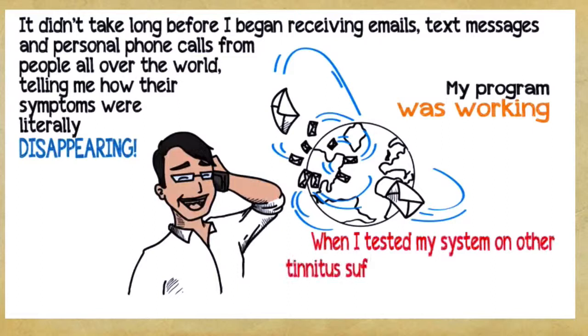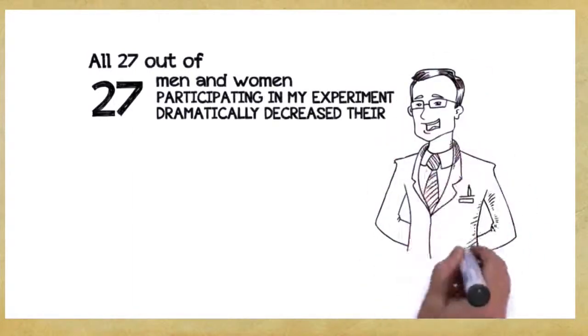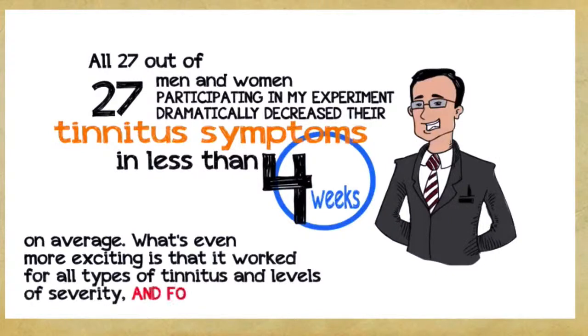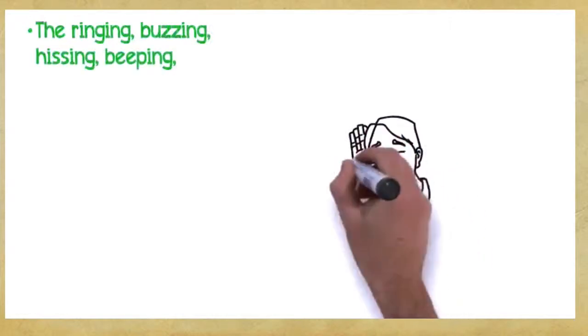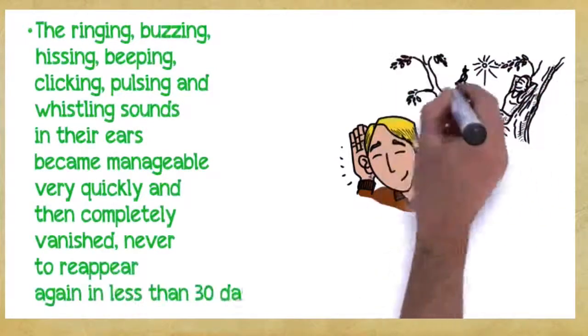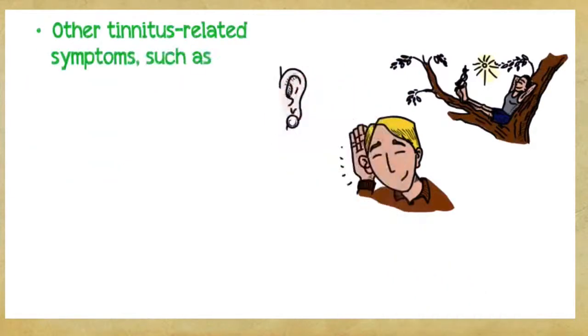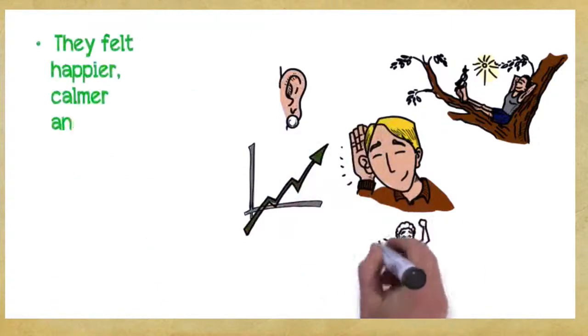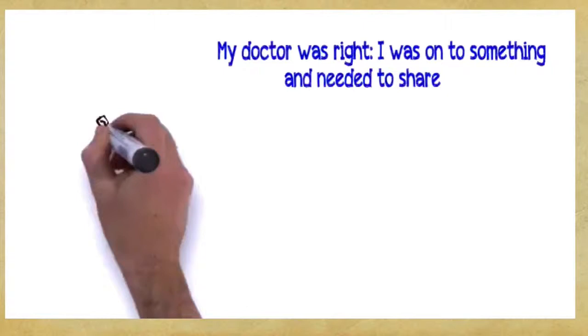What I was offering was a completely safe alternative to all of the dangerous treatments offered by the medical community. I sent off my five-step protocol to several dozen tinnitus sufferers and waited for them to tell me how it worked. It didn't take long before I began receiving emails, text messages, and personal phone calls from people all over the world telling me how their symptoms were literally disappearing. When I tested my system on other tinnitus sufferers, it yielded the same shocking and groundbreaking results. All 27 out of 27 men and women participating in my experiment dramatically decreased their tinnitus symptoms in less than four weeks on average. The ringing, buzzing, hissing, beeping, clicking, pulsing, and whistling sounds in their ears became manageable very quickly and then completely vanished, never to reappear again in less than 30 days. They felt happier, calmer, and more energetic. They felt rejuvenated and reported looking younger and more vibrant.